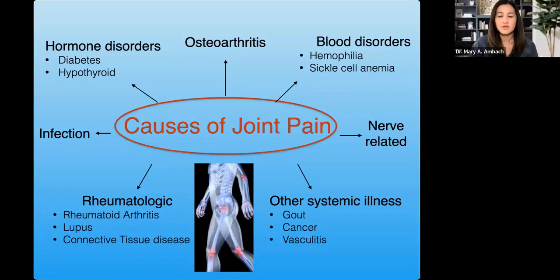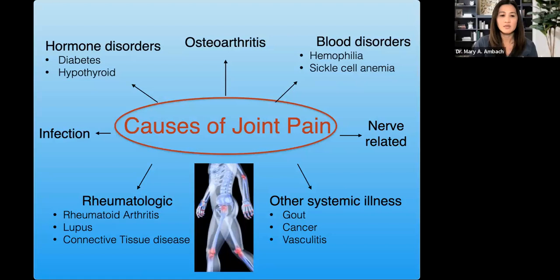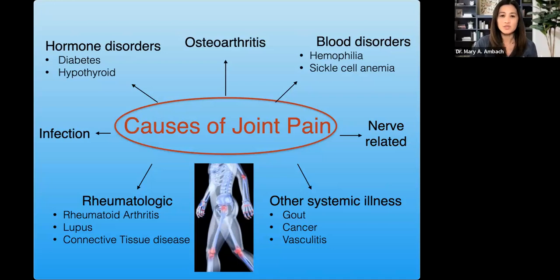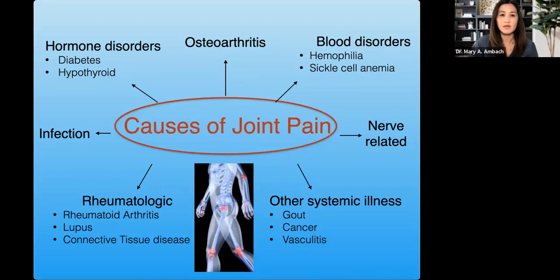Let's get onto our topic — knee pain. Let's start with all the different causes of joint pain. Majority of you have knee osteoarthritis, but there are also other things that can cause joint pain: rheumatologic conditions like rheumatoid arthritis, lupus, genetic conditions that make your joints lax, connective tissue disease, gout or pseudogout, vascular disorders, diabetes — which actually causes joint pain — nerve conditions, blood disorders, and nerve disorders. When you see us for the initial evaluation, we make sure we rule out all these other things before providing treatment for your osteoarthritis.